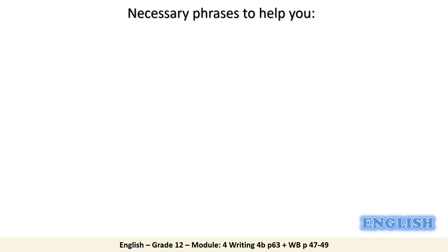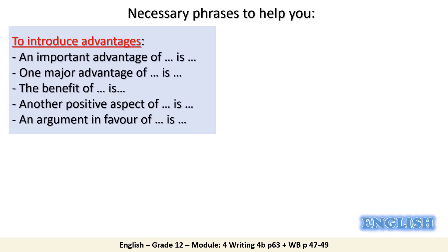Here are useful phrases you can use to introduce advantages. Before writing an advantage, you can use: 'An important advantage of tourism is...', 'One major advantage of tourism is...', 'The benefit of tourism is...', 'One benefit of tourism is...', 'Another positive aspect of tourism is...', or 'An argument in favor of tourism is...'